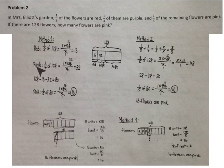In our first method of solving this, we know 1/8 of the flowers are red. So 1/8 of 128 is 16. We know 1/4 of the flowers are purple. 1/4 of 128 is 32. If we add our red and purple flowers together and subtract that from 128, we find out how many flowers are left. And that is 80 flowers. We know that 1/5 of the remaining flowers are pink. 1/5 of 80 is 16. There are 16 pink flowers.